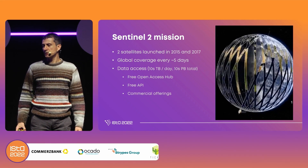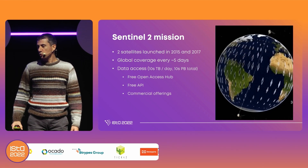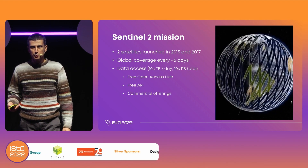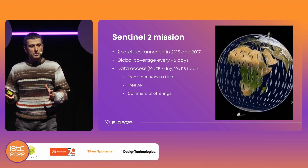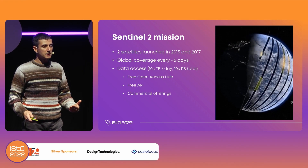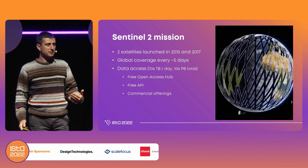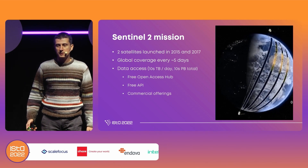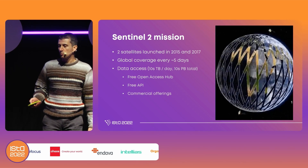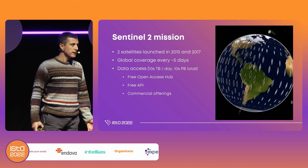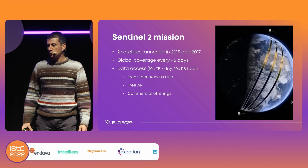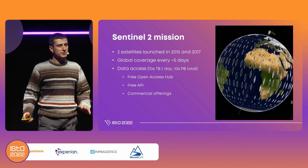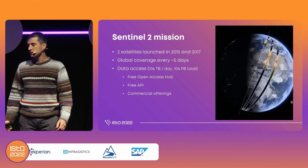It's two satellites that circle around the Earth in this strange orbit that you see on the right-hand side of the slide. They provide global coverage every five days, meaning you see new images of every place on the Earth every five days. The data access to those images is free of charge — you can download them, you don't have to pay anything, all you have to do is create an account on the website. There are tens of terabytes of data produced every day and already around tens of petabytes accumulated. There are also some commercial offerings, but we're mostly going to focus on the free and open data access in this presentation.